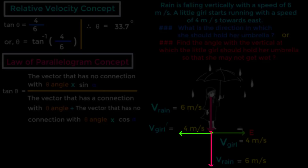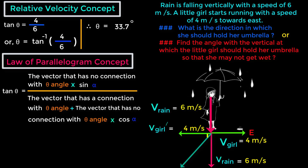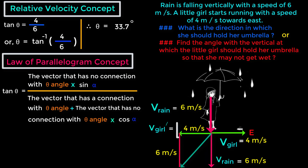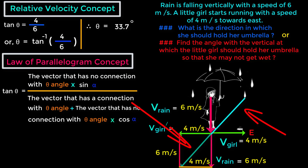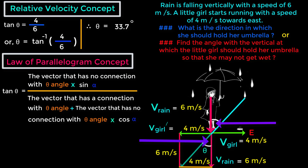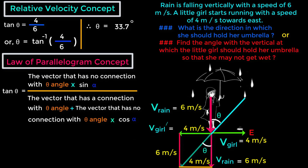When two vectors spread from one point, we get a resultant. For the 6 m/s rain vector we write 6 m/s, and opposite sides of the rectangle are equal. If we extend this resultant, this angle will be θ. Since opposite angles are equal, if we find this θ, we also get the required θ — meaning the girl must hold her umbrella at this angle θ.